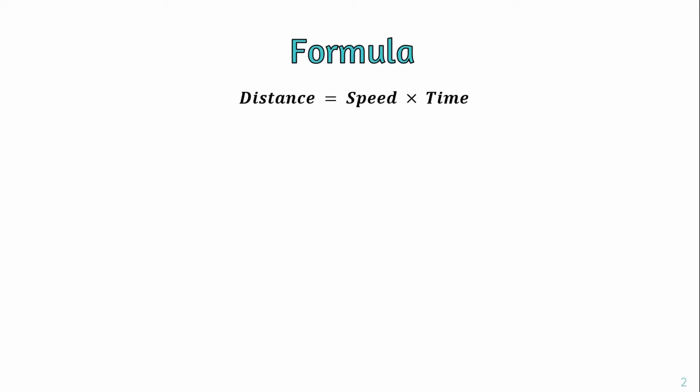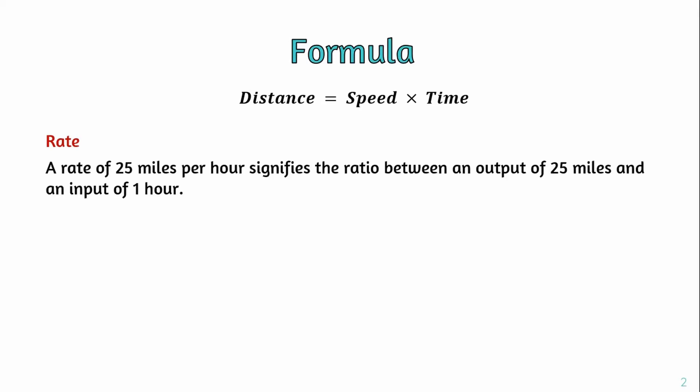When we use the formula, we will use speed by rate. We will use the rate of 25 miles per hour. When we use the rate of 25 miles per hour, it is the ratio between an output of 25 miles per hour and the input of 1 hour. That means if we use the rate of 25 miles per hour, then the distance is covered over a time of 1 hour.